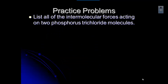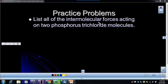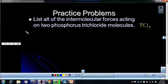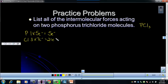Let's try this problem. Hopefully you recognize that phosphorous trichloride is PCl3 — one phosphorous and three chlorines. When we draw the Lewis structure, we need to first add up all the valence electrons. We have one phosphorous with five valence electrons, and then three chlorines each with seven, which gives us a total of 21. Adding those together, we have a total of 26 valence electrons.